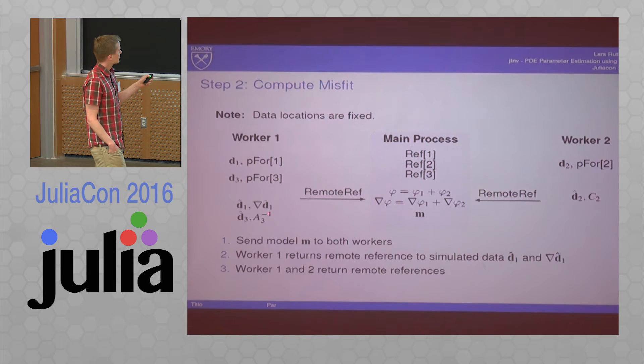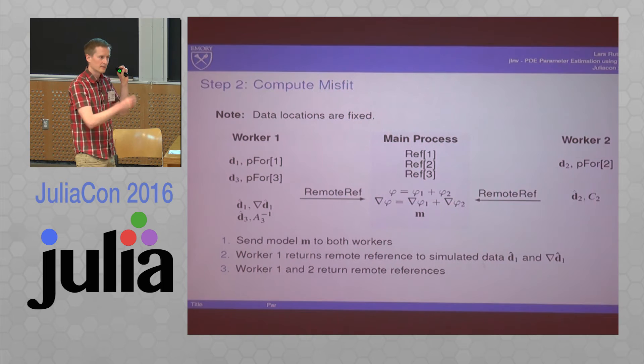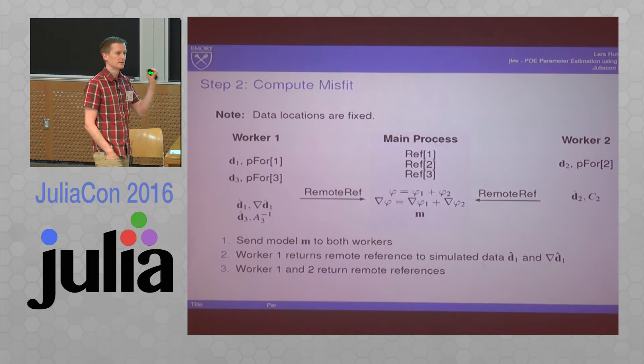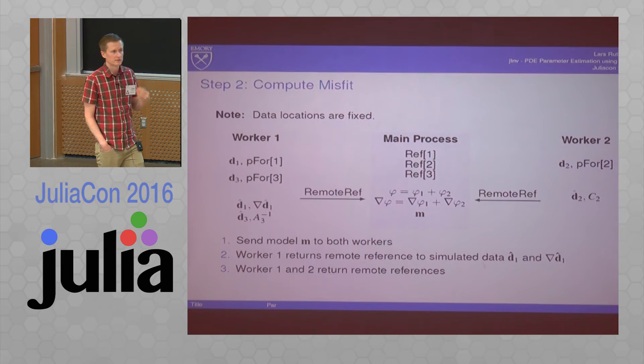And then it solves the third problem and returns that. For instance, for the third problem, we used a direct method. So we will generate a factorization, and we're going to keep that alive on this worker, because we will come back later to that worker to do a Hessian matrix vector product, and we want to use that. We don't want to factorize the system more often than necessary. For doing that, we have a specialized code basically starting out from the P-map and then really modifying it to do all this bookkeeping for us.